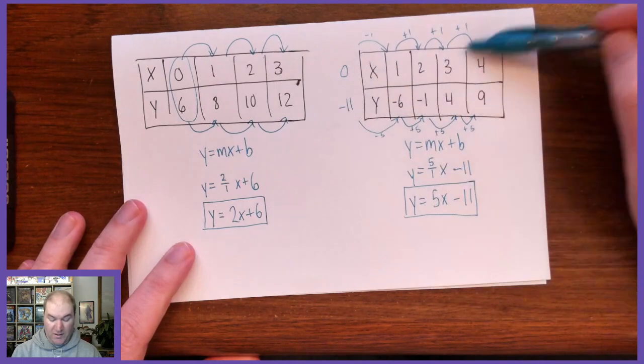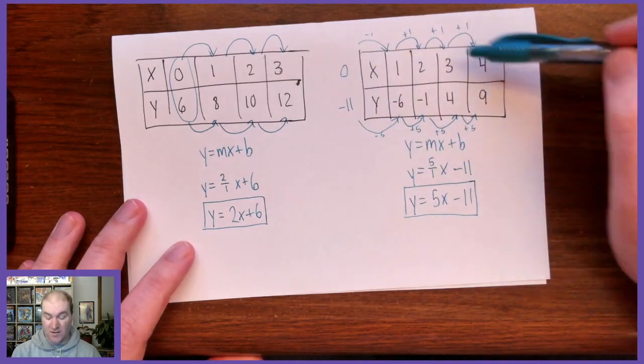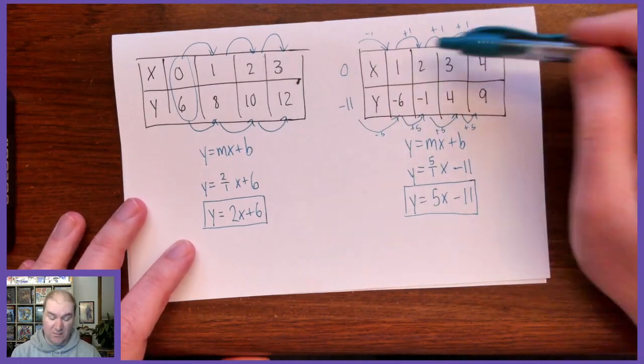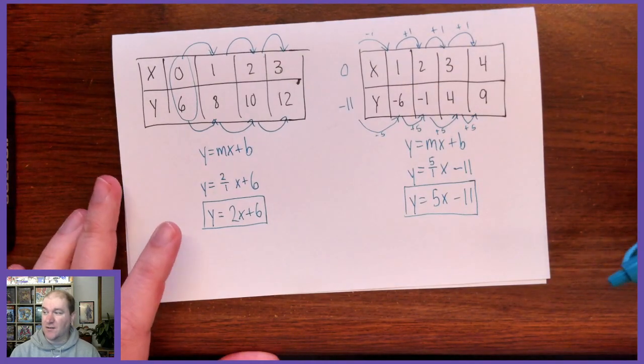So the new part here is they might not give you x is 0. You might have to use the patterns in the table and work backwards to get to the x is 0.